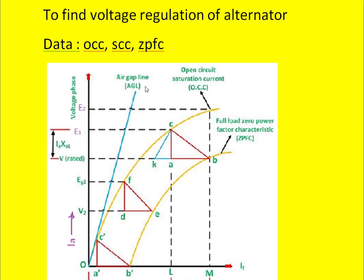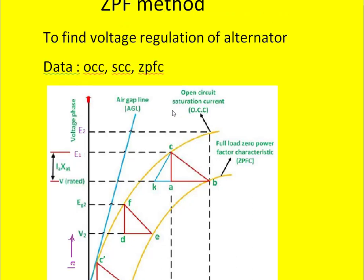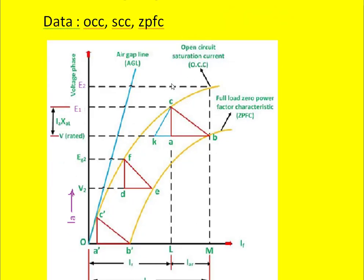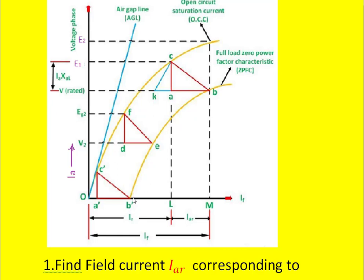From the short circuit test we get the rated armature current and the corresponding field current. Let that field current corresponding to the rated armature current under short circuit be given by OB dash.